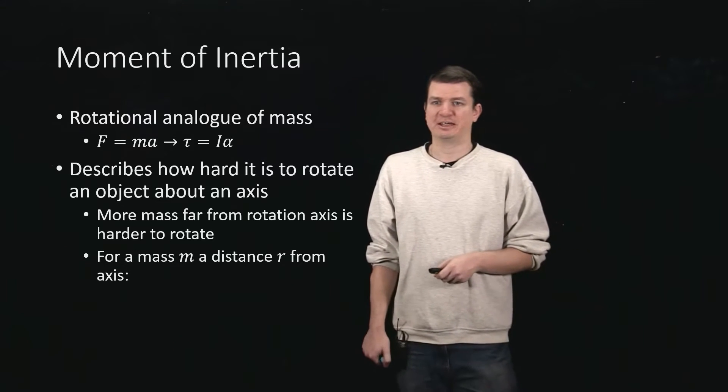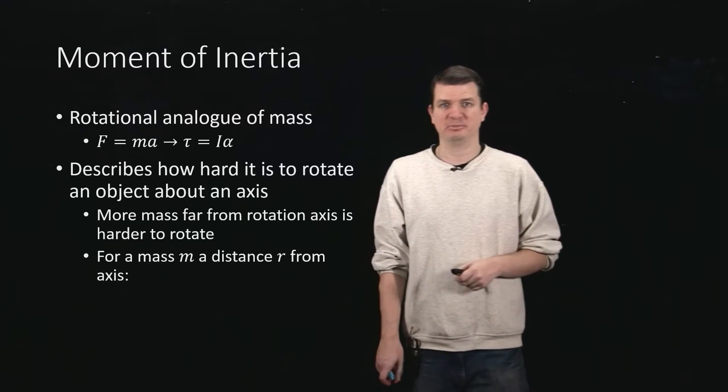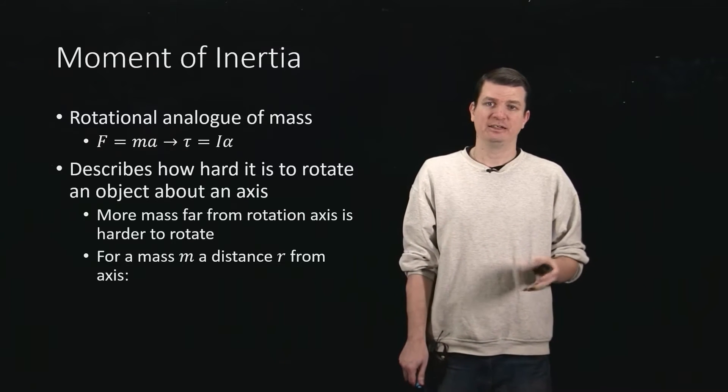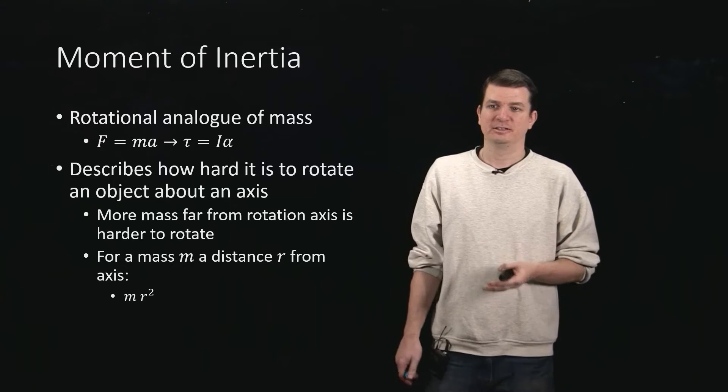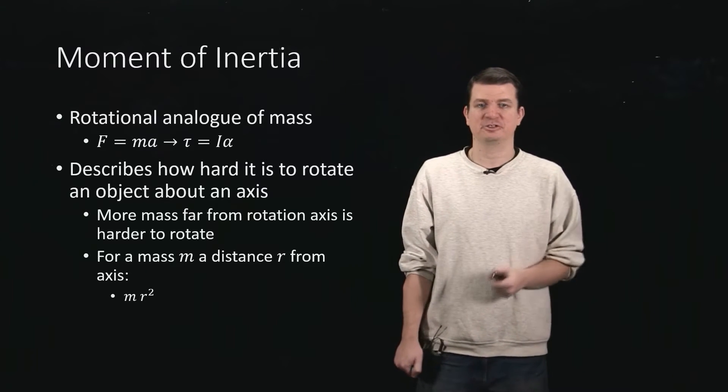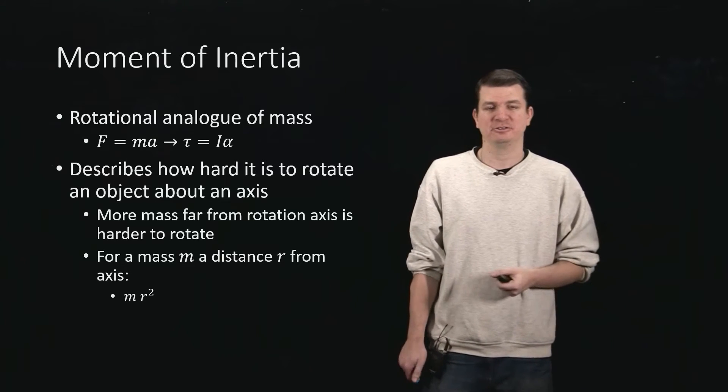So the way that that actually goes is, if you pick some little amount of mass m, and you've got it some distance r away from the axis, then that piece of mass contributes mr squared to your moment of inertia.